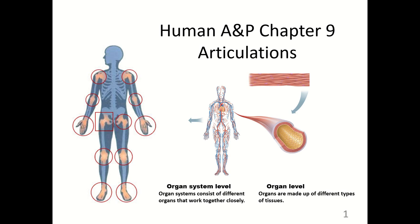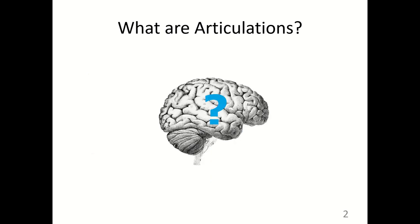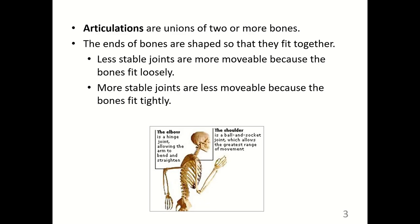This lecture is on Chapter 9, Articulations. Articulations are the unions of two or more bones. The ends of bones are shaped so that they fit together. Less stable joints are more movable because the bones fit loosely together. More stable joints are less movable because the bones fit tightly together.